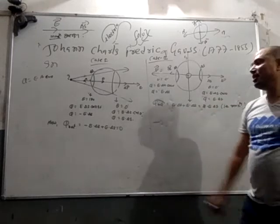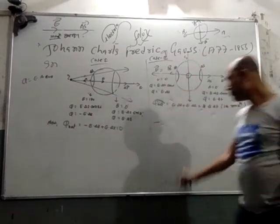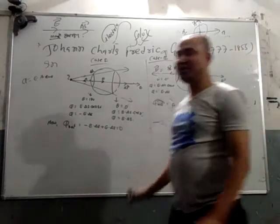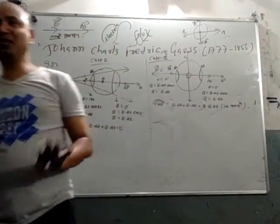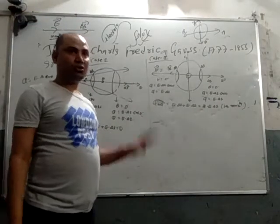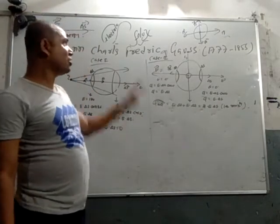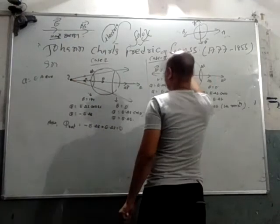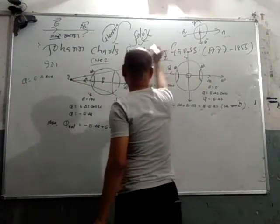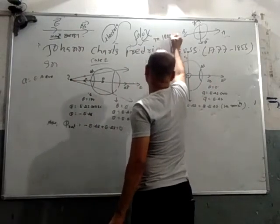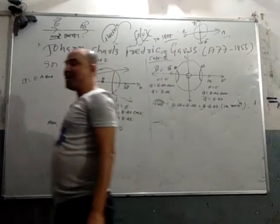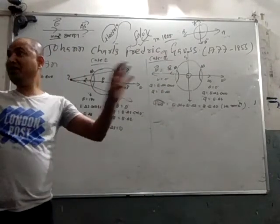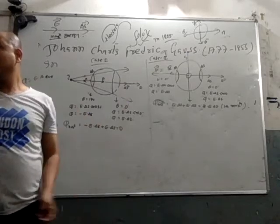Compared to Case 1 where net flux was zero, here the net flux is maximum. This concept was first given by Carl Friedrich Gauss in 1805. He gave the concept that for a charged particle kept inside the surface, there will be a maximum value of flux.